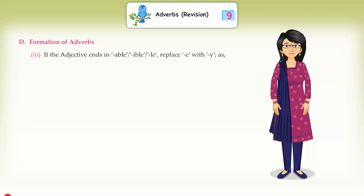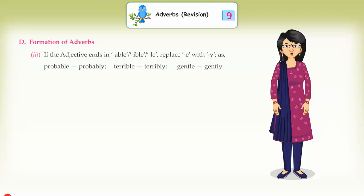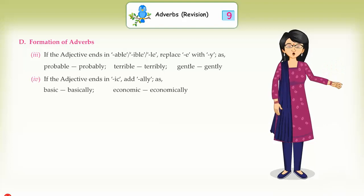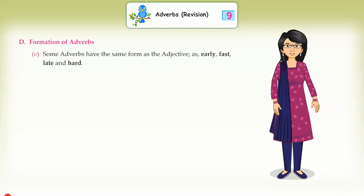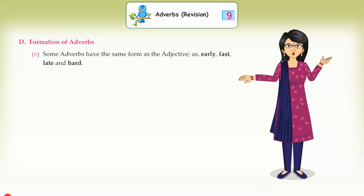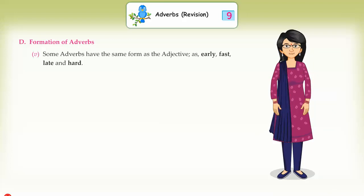(3) If the adjective ends in '-able', '-ible', or '-le', replace the final 'e' with 'y'. Examples: probable → probably, terrible → terribly, gentle → gently. (4) If the adjective ends in '-ic', add '-ally'. Examples: basic → basically, economic → economically. (5) Some adverbs have the same form as the adjective, such as: early, fast, late, and hard.